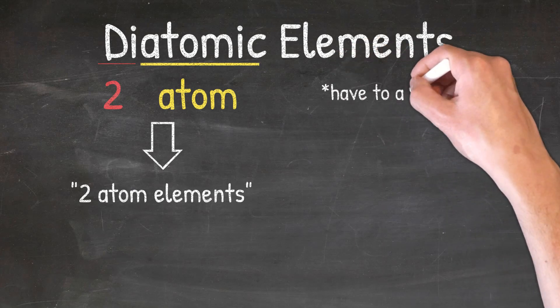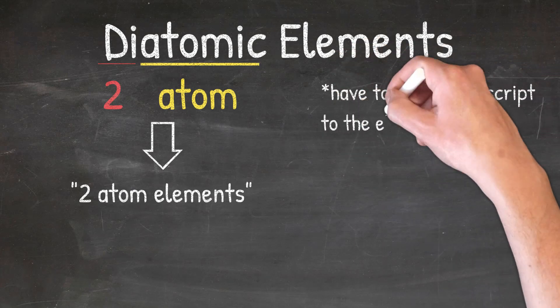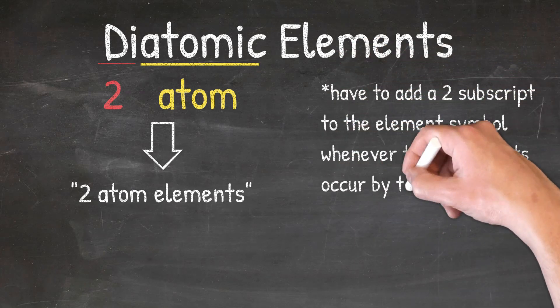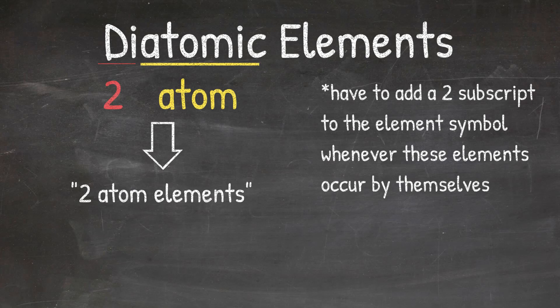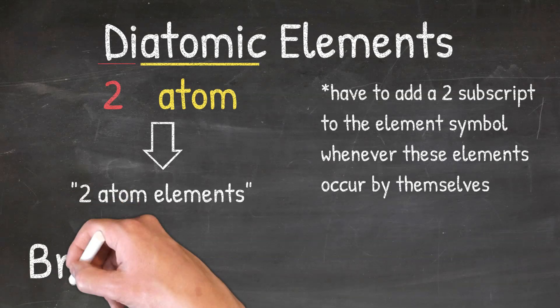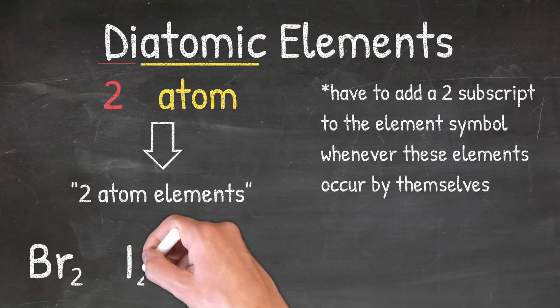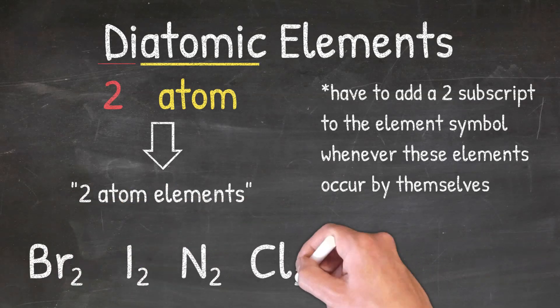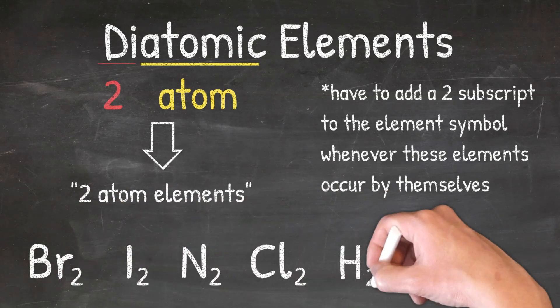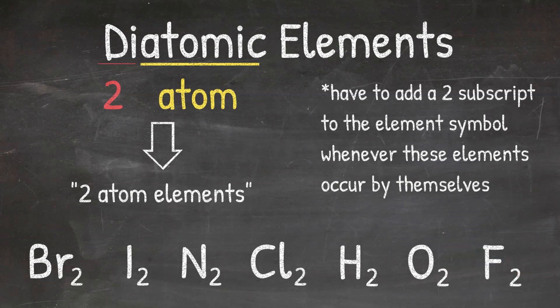This means that we have to add a subscript of two to the element symbol whenever we have these elements occur by themselves in a chemical reaction or a practice problem. The seven diatomic elements are Br, I, N, Cl, H, O, and F. Notice here that each of these elements have a subscript of two, making them diatomic.